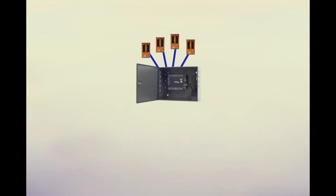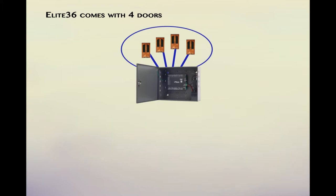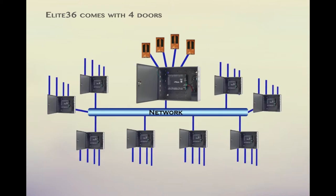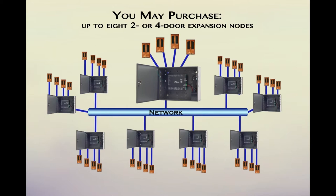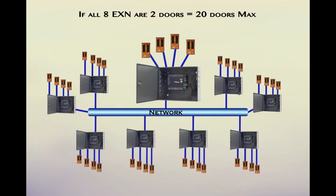As a single module, the E3 Elite 36 controller has the capacity of four doors. To reach a greater door capacity, you may purchase up to eight two- or four-door expansion nodes. The maximum door capacity of the system is determined by the amount of two- and four-door nodes that are utilized. For example, if all eight expansion nodes are two-door models, then only 20 doors can be secured — 16 doors for the expansion nodes in addition to the four doors already available on the controller.